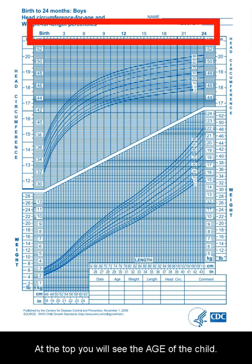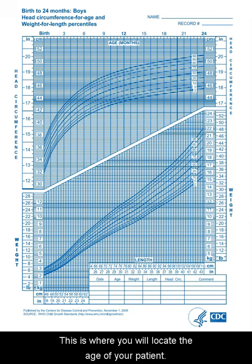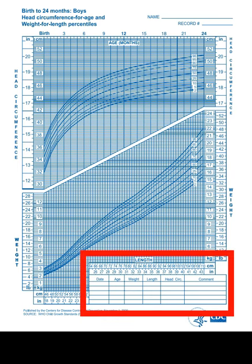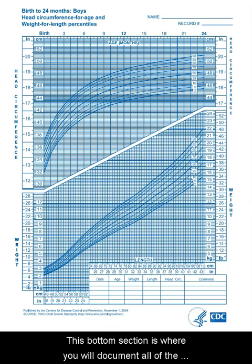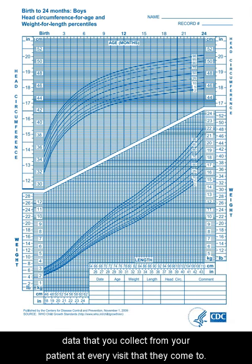where you can document in pounds or kilograms. At the top, you will see the age of the child — this is where you will locate the age of your patient. The bottom section is where you will document all of the data that you collect from your patient at every visit.